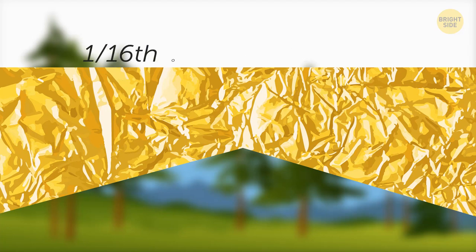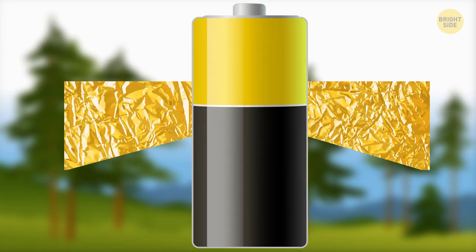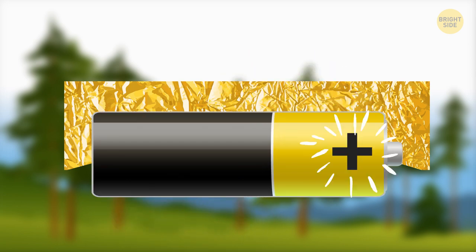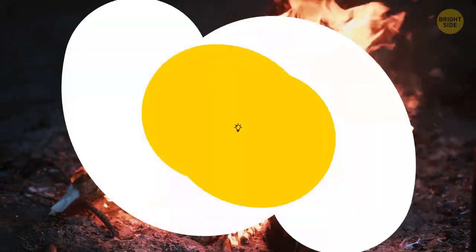Tinfoil will burn fast and you need to protect your hands. Place one side of your tinfoil bowtie to the plus contact of the battery and the other to the minus contact. If you've prepared some dry grass or firewood, you'll have yourself a campfire in no time.